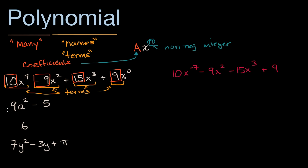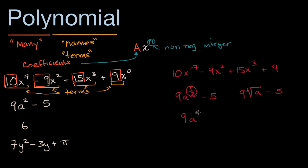Let's give some other examples of things that are not polynomials. If I were to change the second one to 9a to the one-half power minus five, this is not a polynomial, because this exponent is no longer an integer — it's one-half. And this is the same thing as 9 times the square root of a minus five. This also would not be a polynomial. Or, if I were to write 9a to the a power minus five, also not a polynomial, because here the exponent is a variable — it's not a non-negative integer.